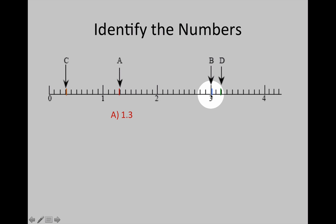B is right on the 3, so we could write it just as the number 3. Or if we're using tenths, we can write 3.0.